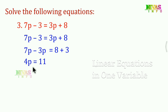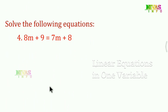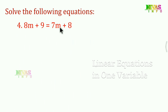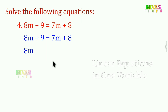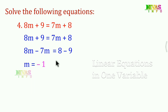Only single p value is equal to 11 upon 4. Next, the fourth question: 8m minus 7m is equal to 8 minus 9. So 8m minus 7m gives only 1m. m is equal to negative 1. That is the answer.